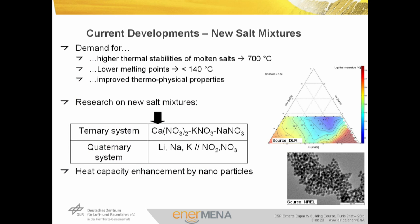Current developments in two-tank molten salt storage focus on identifying new salt mixtures that are cost-effective, operable at temperatures of at least 700°C, and show a melting point below 140°C. Research focuses on ternary systems with three components and systems with even more components. Another approach is enhancement of heat capacity by addition of nanoparticles.